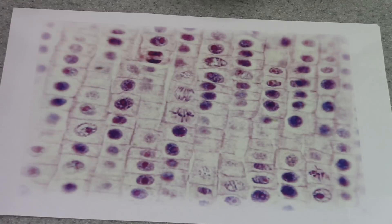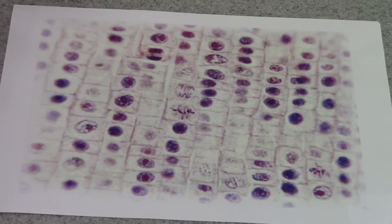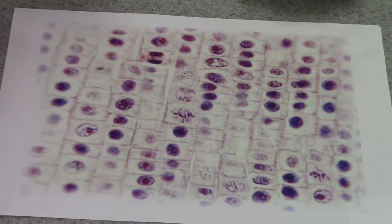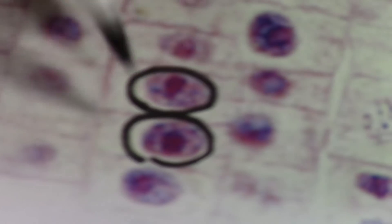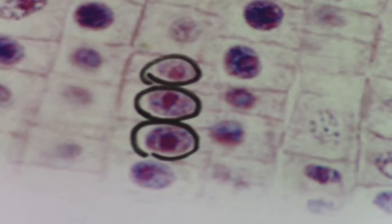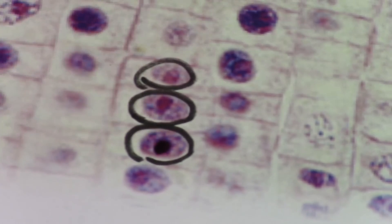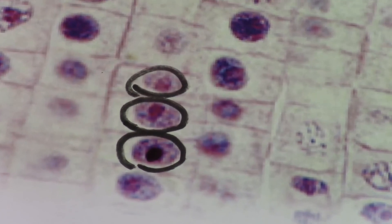So, for example, here we can see some cells that are clearly still in interphase. We can tell that because the nucleolus is clearly visible there inside the nucleus of each cell.